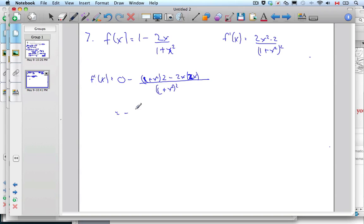Now that minus sign is up front of the whole thing. I'm going to keep it here. Distributing this, I get (2 + 2x² - 4x²)/(1 + x²)².